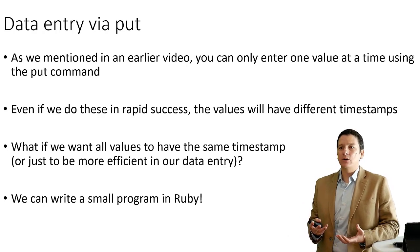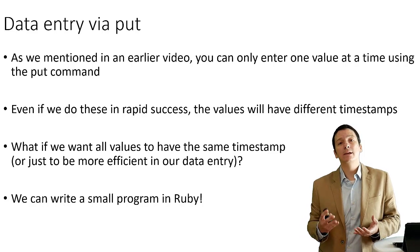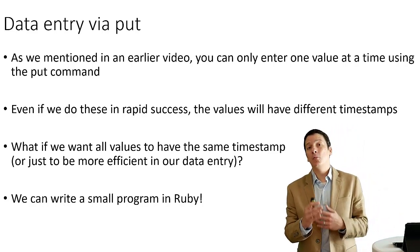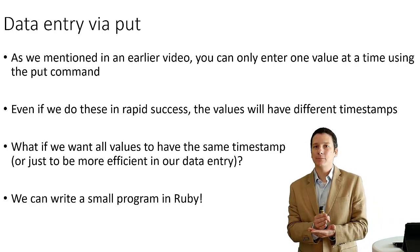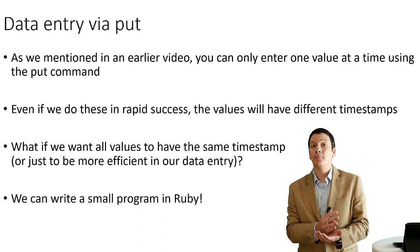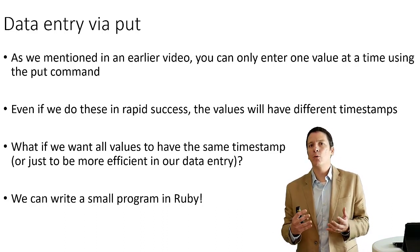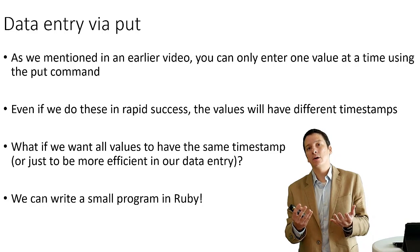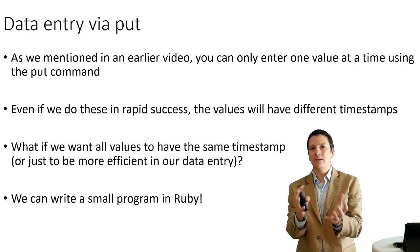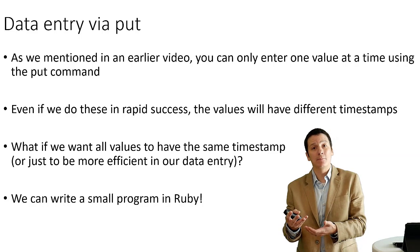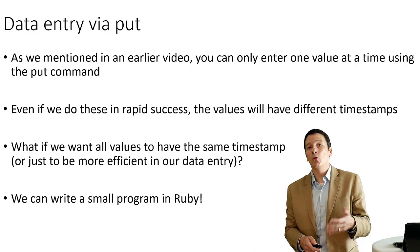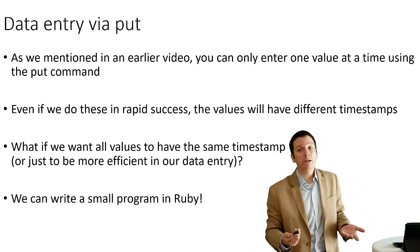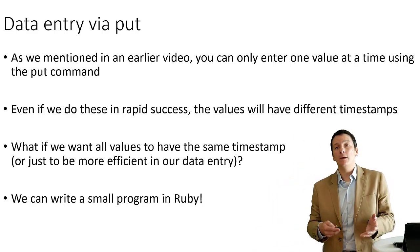As mentioned in an earlier video, if we're using the put command at the HBase shell we're only able to insert one value at a time, and no matter how rapidly we insert values, all of the values are going to have a different timestamp associated with them in their metadata. So the question arises: what if we want to have multiple values entered into our database as one continuous object, all with the same timestamp, or even just insert data more efficiently than using individual put commands? We can write a small program using JRuby to do this.